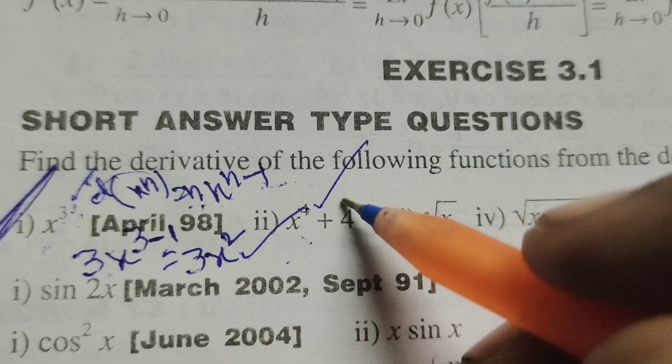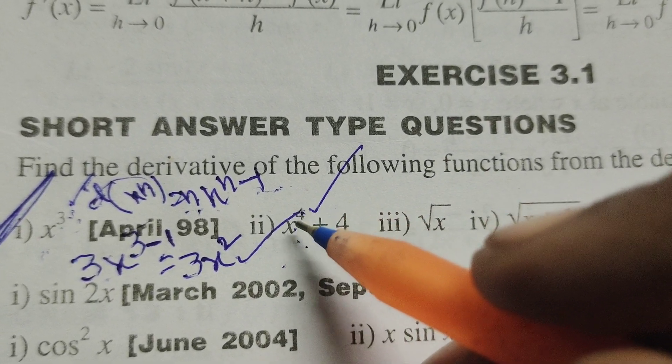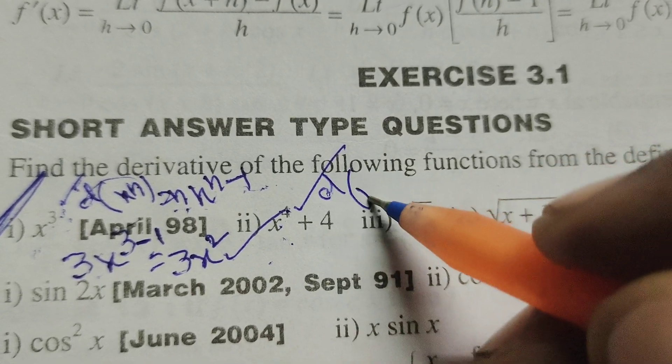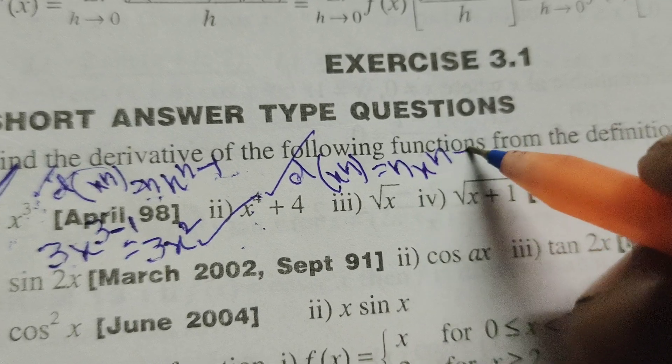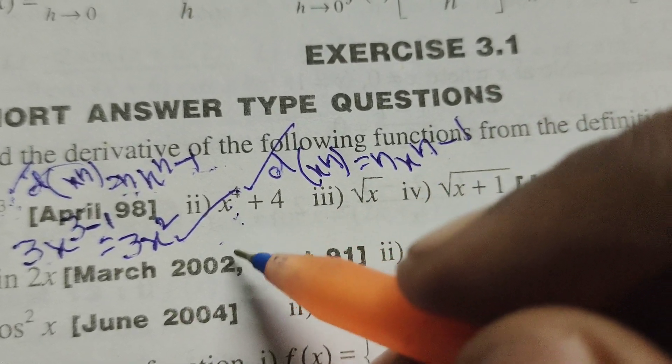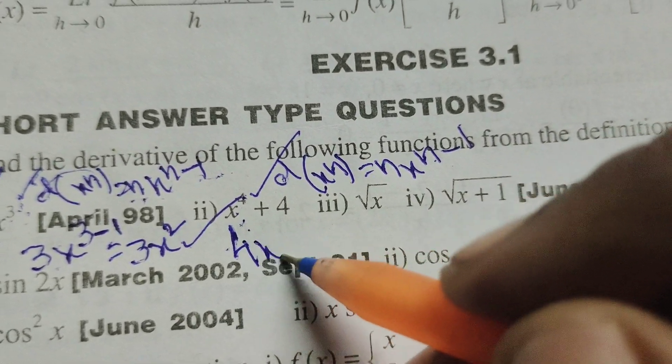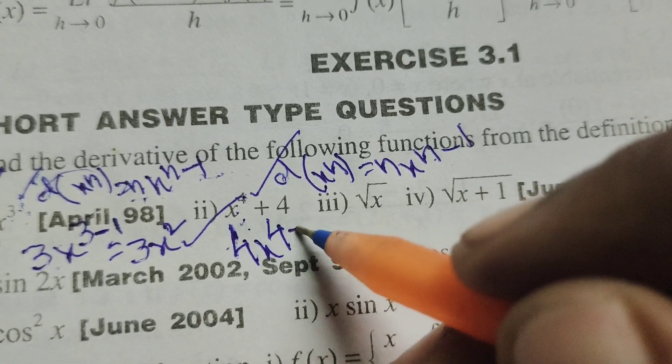Here, differentiation of x^4 means using the formula: differentiation of x^n, that is n times x^(n-1). n means 4, so 4 times x^(4-1).